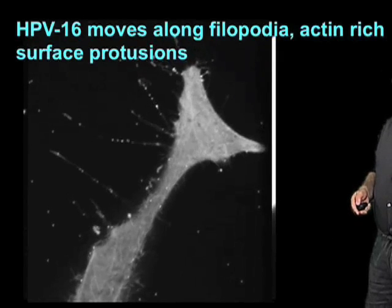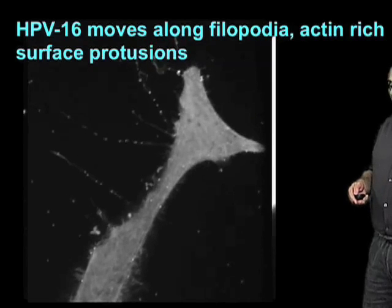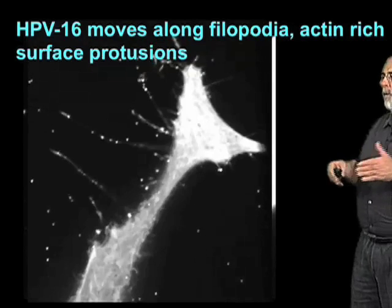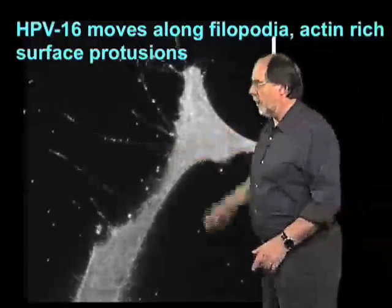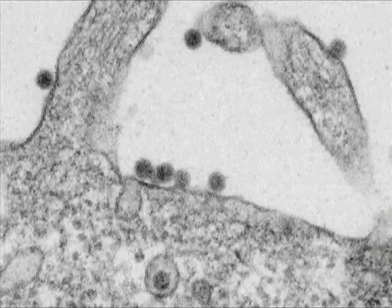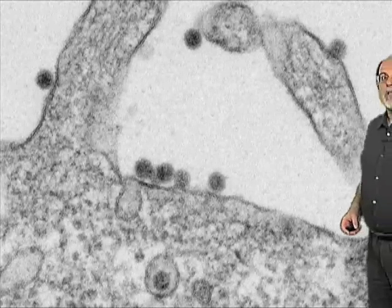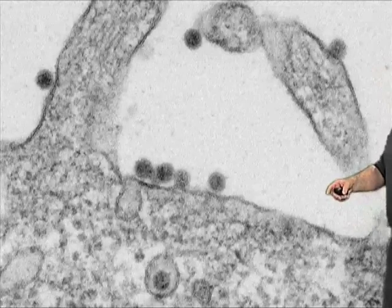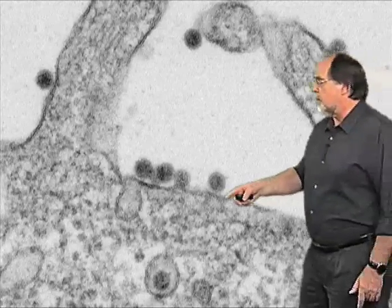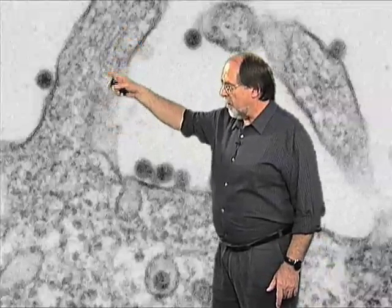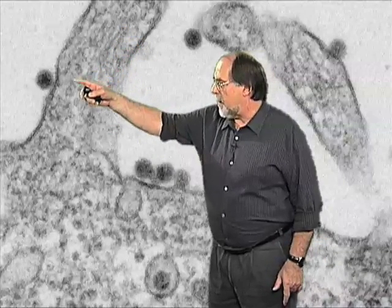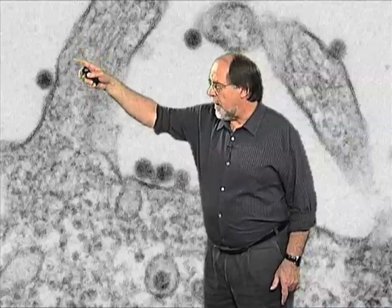The movement is entirely dependent on the retrograde actin flow inside the filopodia. The actin is also moving from the tip down to the cell body. This same phenomenon can also be seen by electron microscopy — you have here the cell surface and here is the filopodium or the beginning of it. Even the actin filaments are visible, and this may be a virus which is moving down to the cell body.